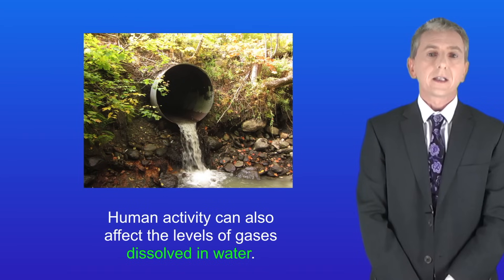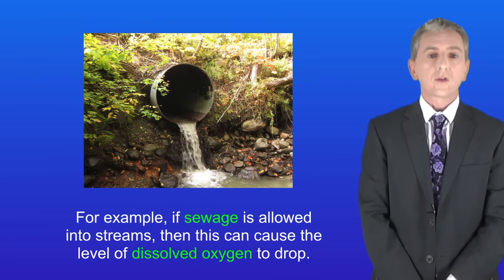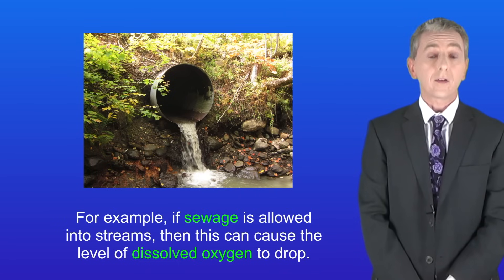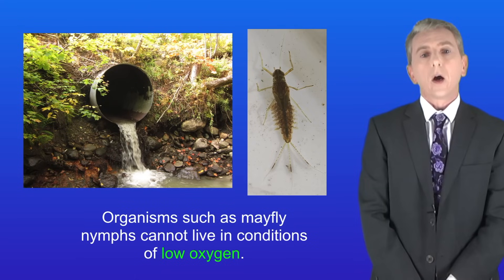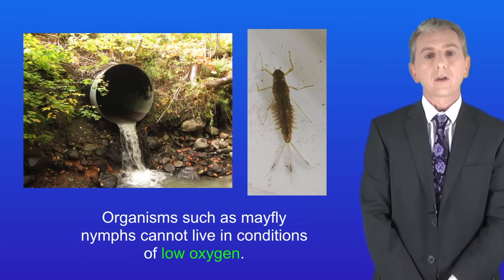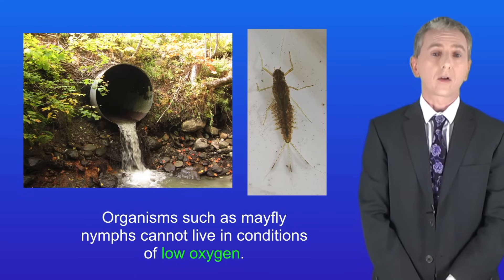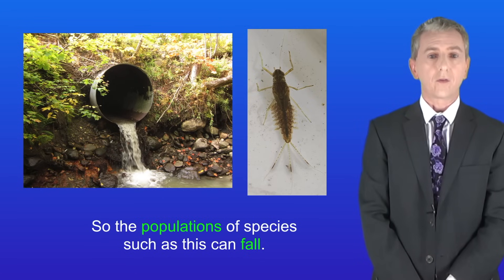Human activity can also affect the levels of gases dissolved in water. For example, if sewage is allowed into streams, this can cause the level of dissolved oxygen to drop. Organisms such as mayfly nymphs cannot live in conditions of low oxygen, so the populations of species like this can fall.